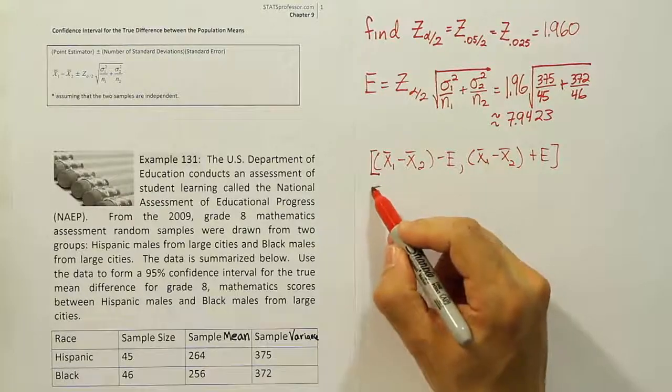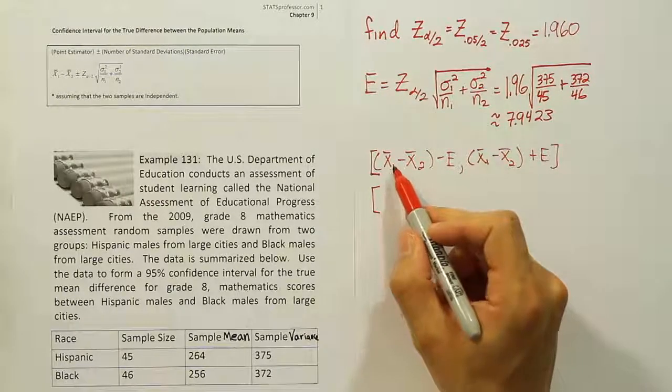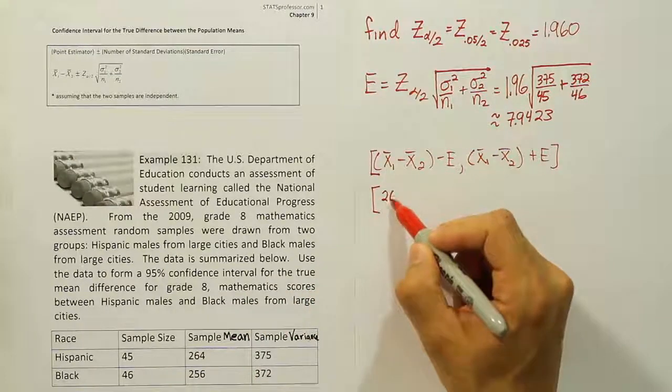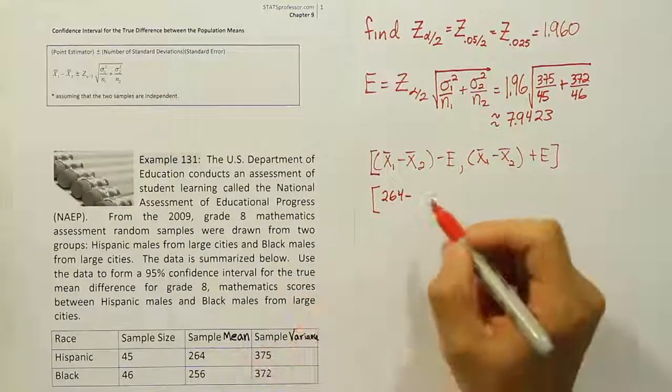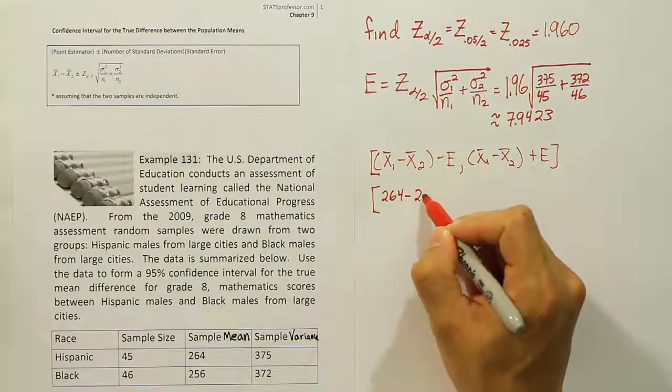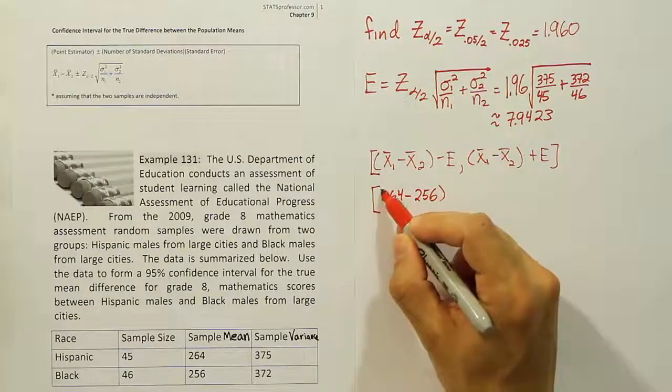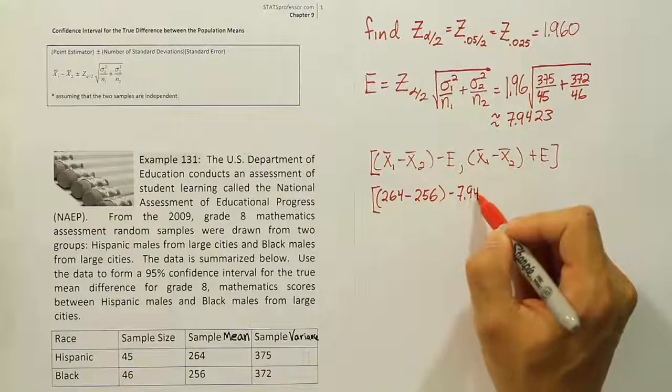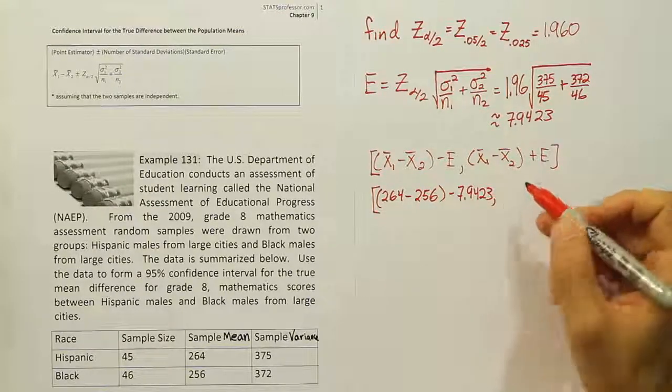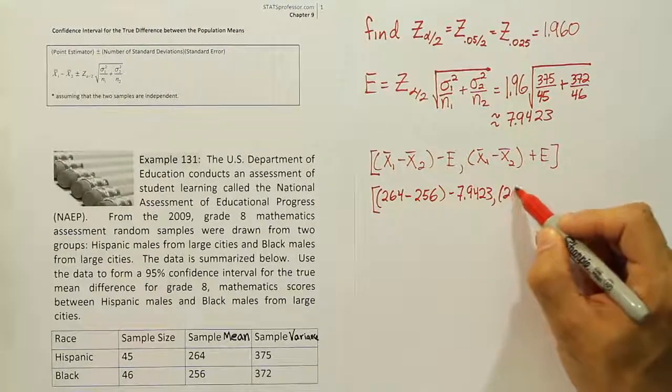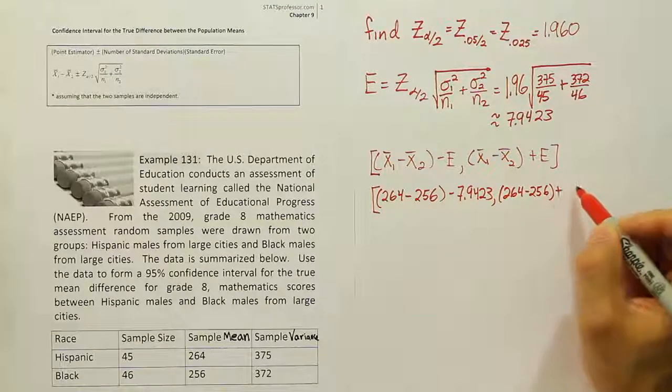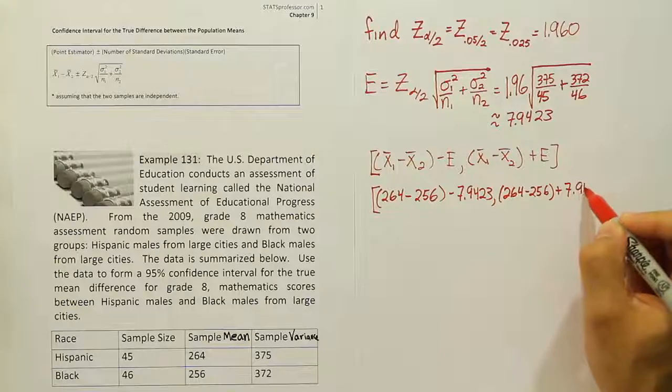So the first difference, if we write it out, we're using Hispanic males as our first group. So it's going to be 264 minus 256, and then subtracting the error, which is 7.9423. And then we'll do the same thing on the other side. It'll be 264 minus 256. But this time we'll add the error, 7.9423.